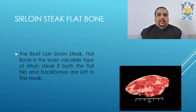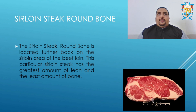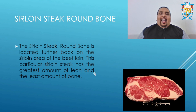Next is the sirloin steak round bone. You can see the round bone here. This sirloin steak round bone is located further back on the sirloin area of the beef loin. This particular sirloin steak has the greatest amount of lean meat and the least amount of bone.